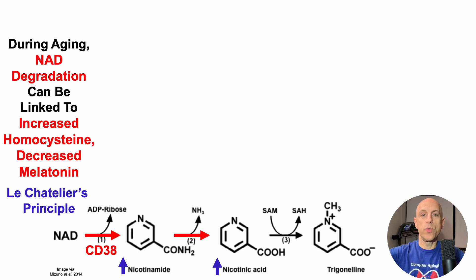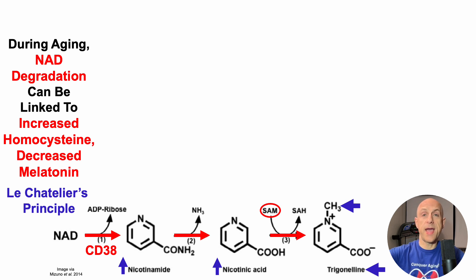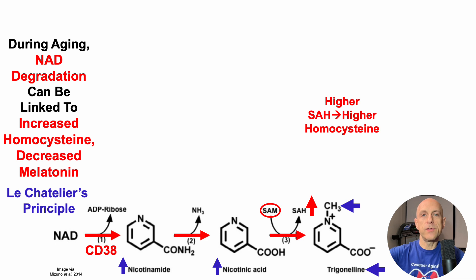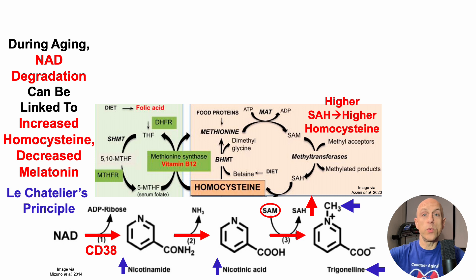An increase in nicotinic acid will then combine with S-adenosylmethionine, otherwise known as SAM, converting it into trigonelline — which is just a fancy way of saying methylated nicotinic acid. Nicotinic acid now has a methyl group attached. That methyl group came from S-adenosylmethionine, which is converted into S-adenosyl homocysteine, or SAH. Higher levels of SAH, when nicotinic acid is converted into trigonelline, will lead to higher levels of homocysteine.